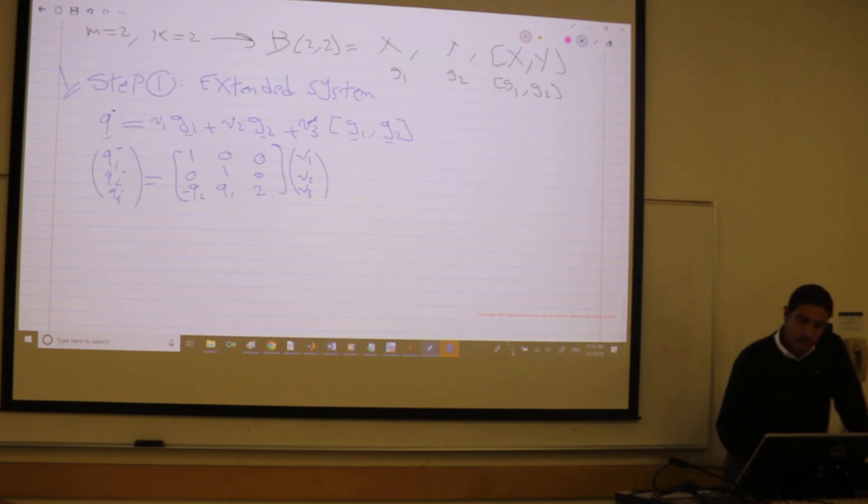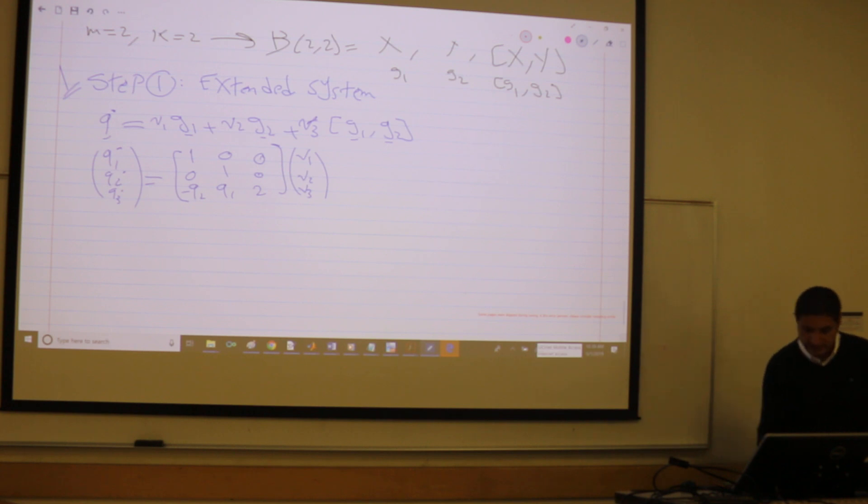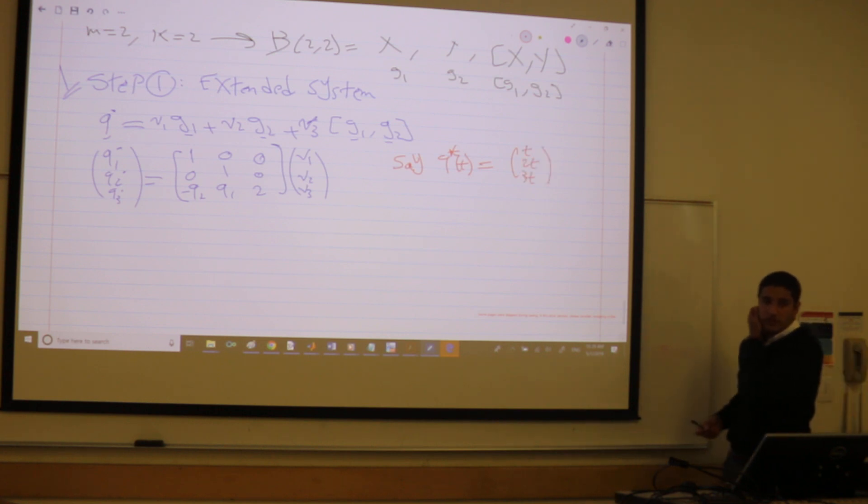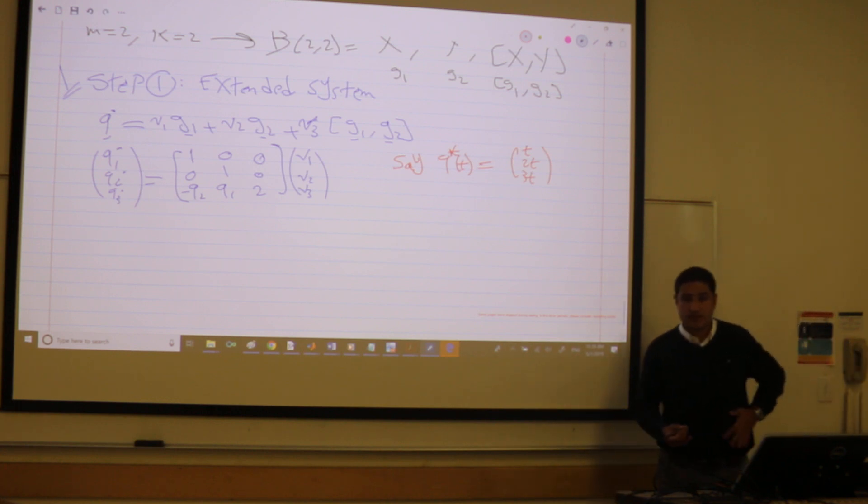Let's have some requirement for the example. So we want to steer this guy from the origin to, say, (1,2,3), the point (1,2,3), in one second. So let's construct. Let's steer here. I want to steer from 0 to (1,2,3) in one second. So say, Q star of T, the curve that I'm going to construct says (T, 2T, 3T). Right? So in one second, it will be (1,2,3). And at the beginning, it's (0,0,0). Any question about that?